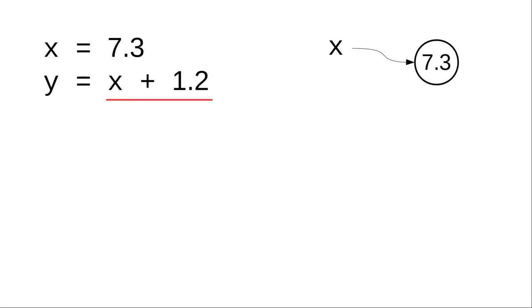Well, what is x referring to right now? 7.3. That means we can substitute as 7.3 plus 1.2, and the right-hand side works out to 8.5, and that value goes into memory. Now, and only now, can we look at the left-hand side and find that the variable y refers to 8.5. So that's the status of memory at this point in our program.